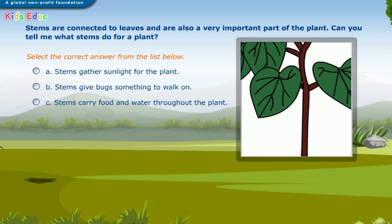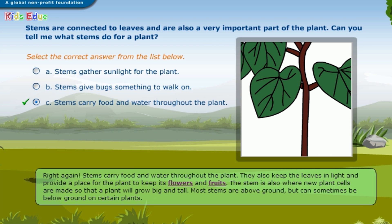Stems are connected to leaves and are also a very important part of the plant. Can you tell me what stems do for a plant? Select the correct answer: A. Stems gather sunlight for the plant. B. Stems give bugs something to walk on. C. Stems carry food and water throughout the plant. Correct — stems carry food and water throughout the plant. They also keep the leaves in light and provide a place for the plant to keep its flowers and fruits. The stem is also where new plant cells are made, so that a plant will grow big and tall. Most stems are above ground, but can sometimes be below ground on certain plants.